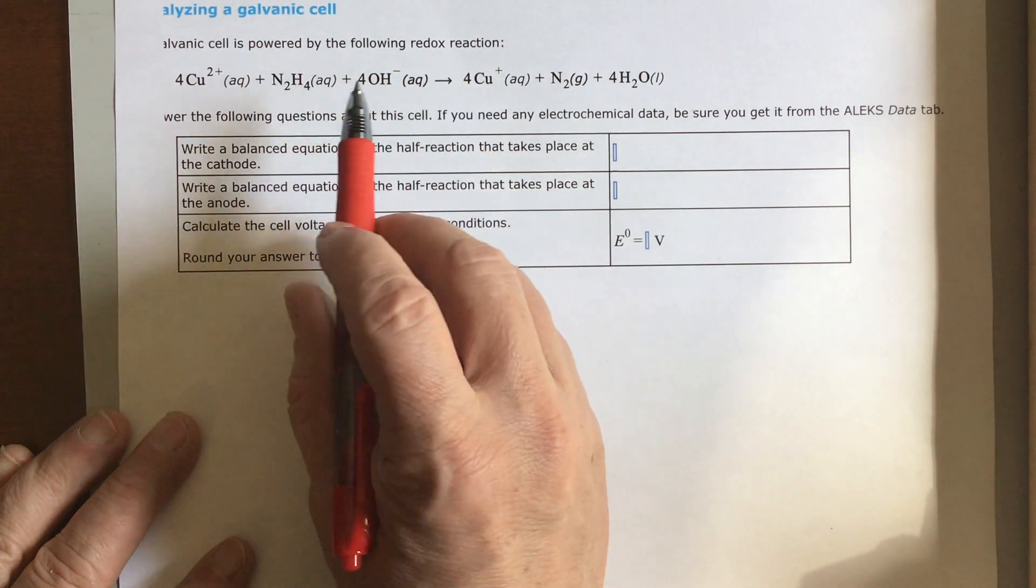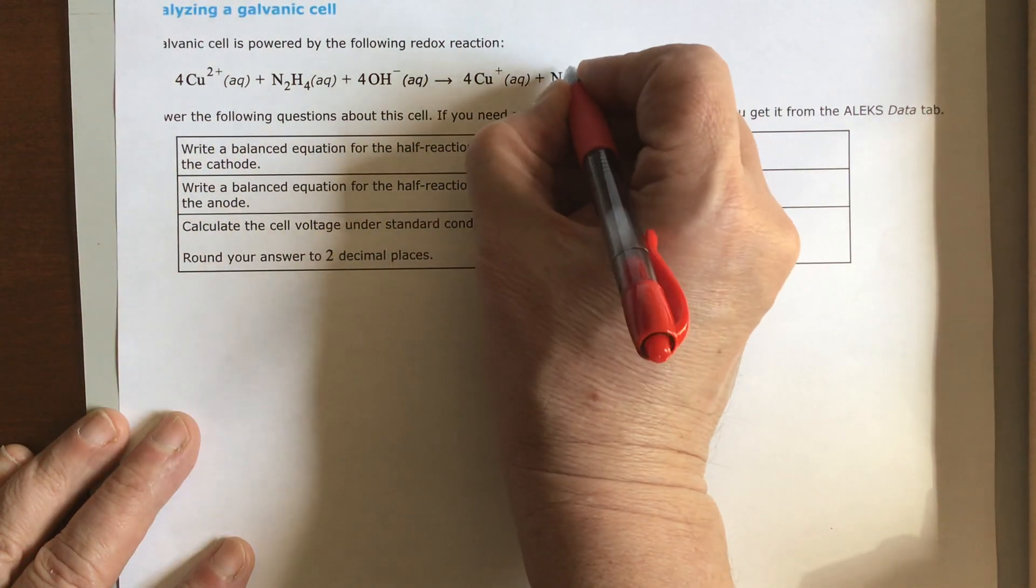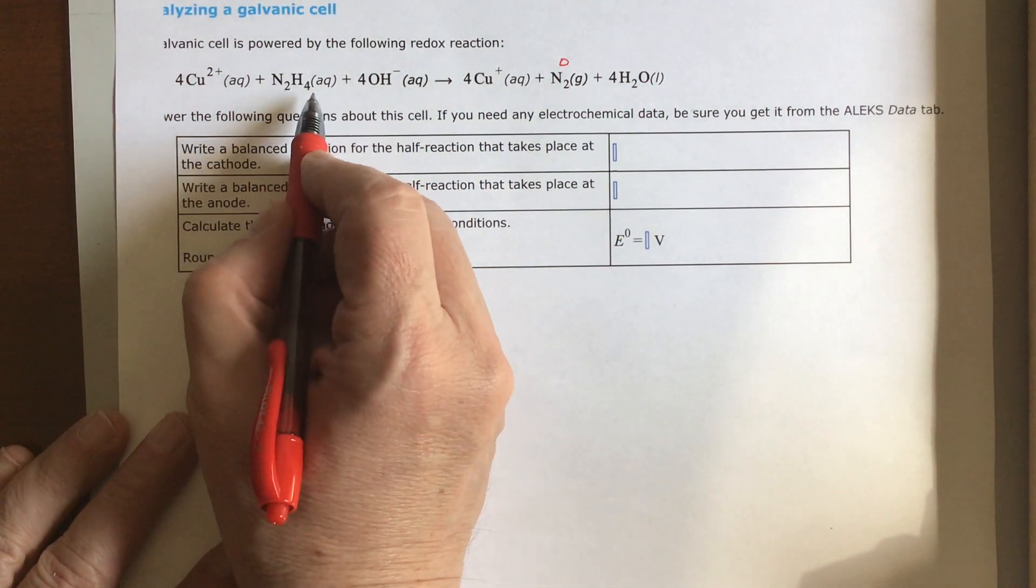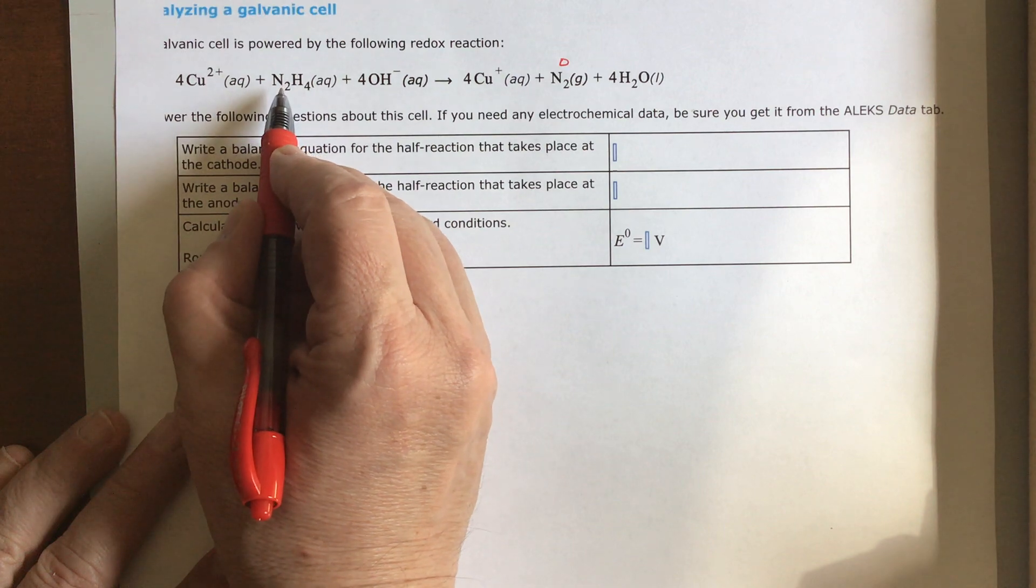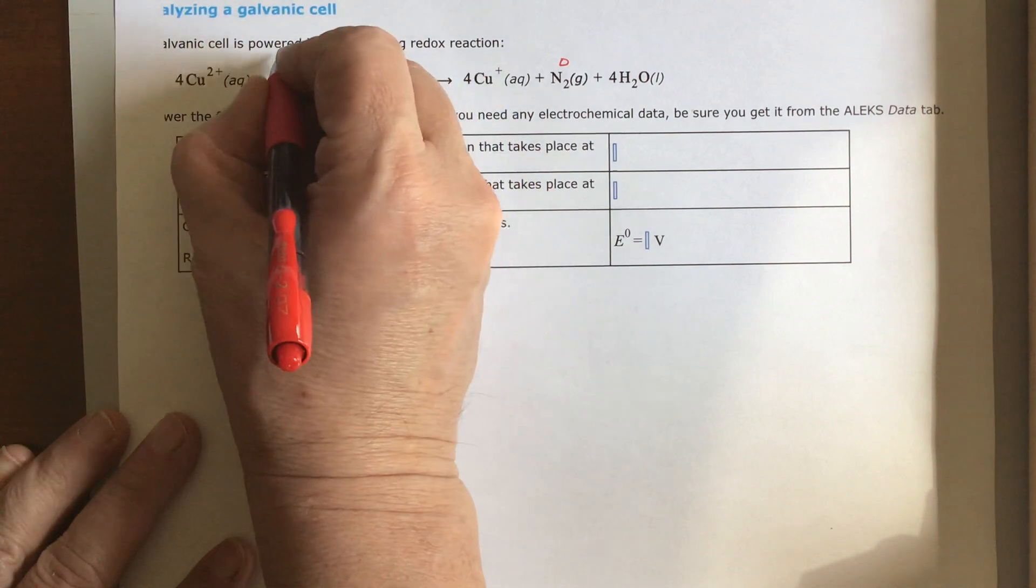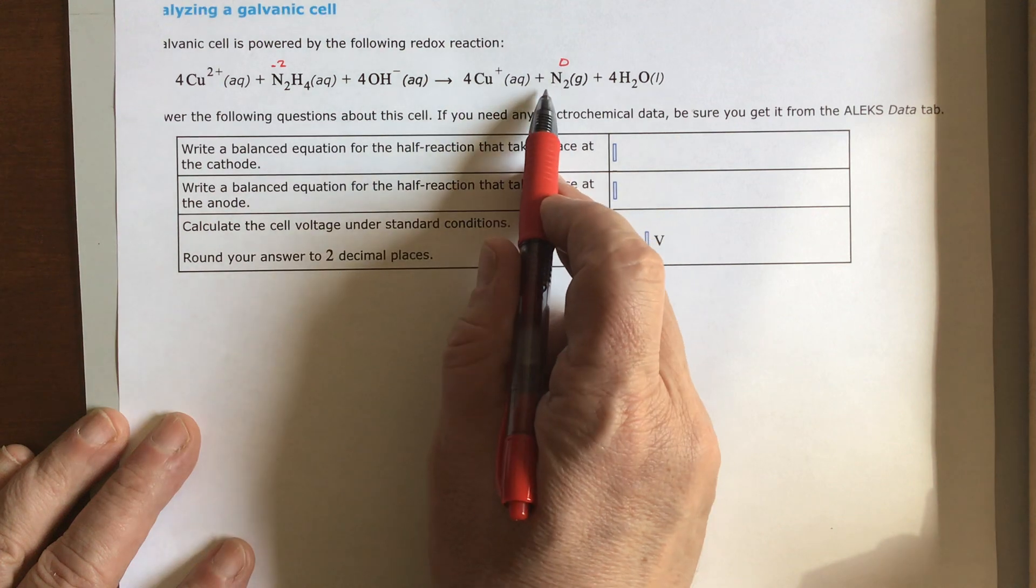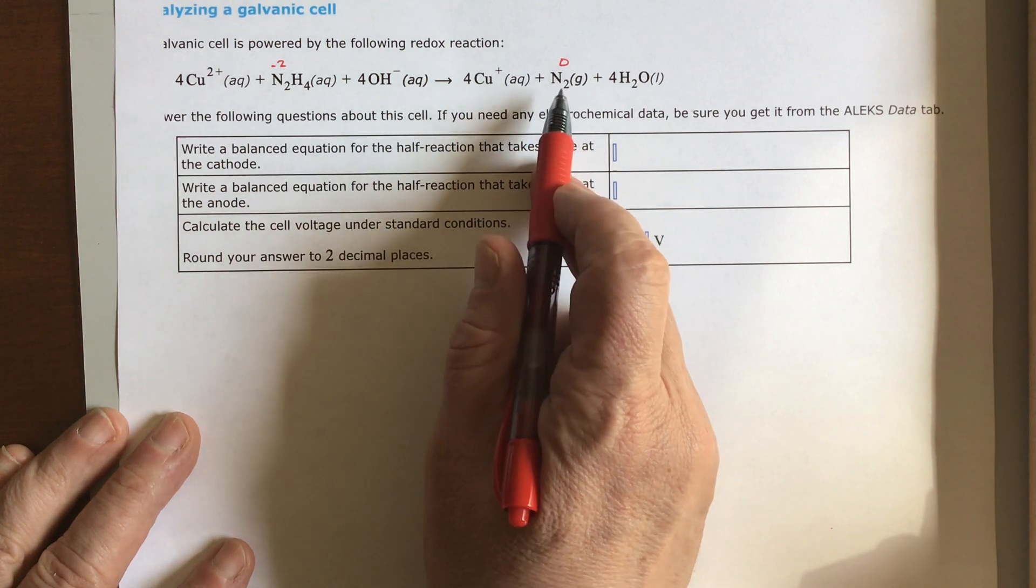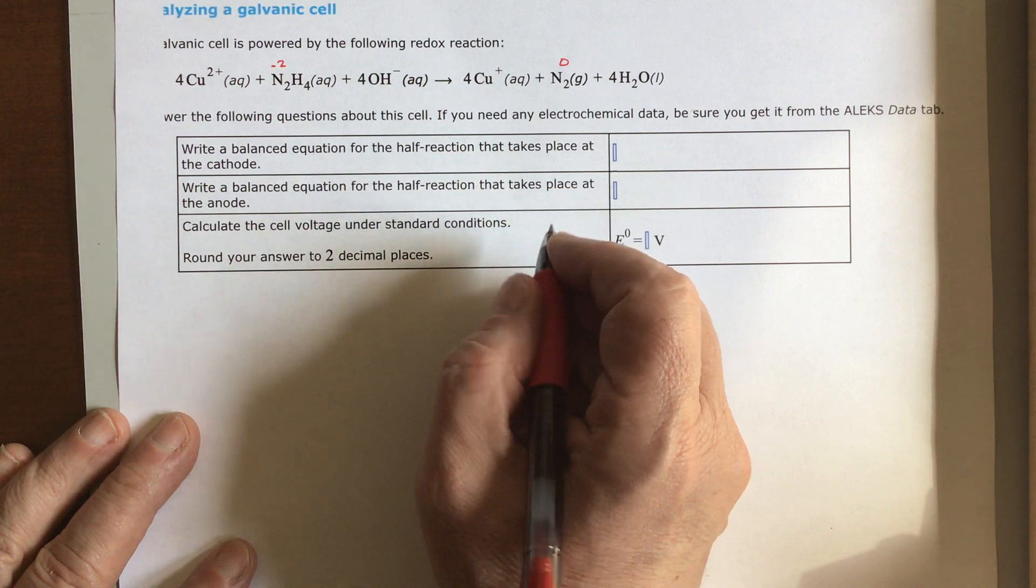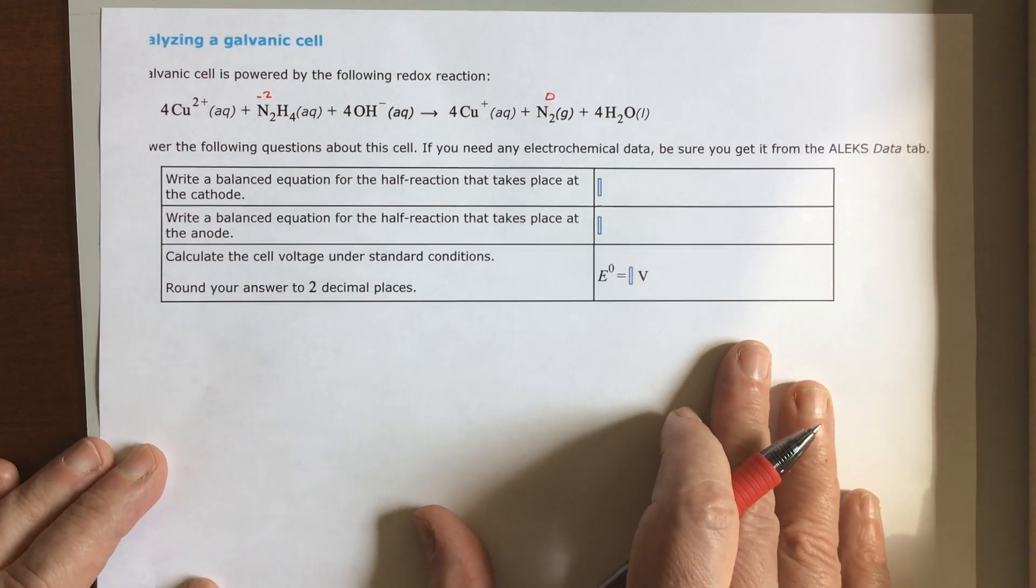So nitrogen, this is gas, is going to have an oxidation number of zero. We've got here that this is four, so this is two negative because it takes two negatives to balance with four positives. So this is negative two, going up in charge. So the nitrogen is being oxidized. We're going to separate these two from each other and find out what's being oxidized and what's being reduced.